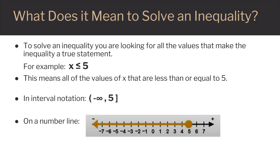We can visualize this set of numbers by using a number line. On the number line, our solutions would be indicated by a closed circle on 5 and an arrow going to the left of 5. The closed circle shows that 5 is included in our solution set, and the arrow shows that all numbers less than 5 are included.